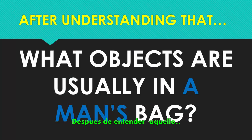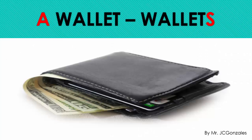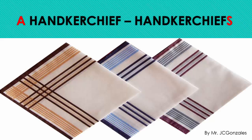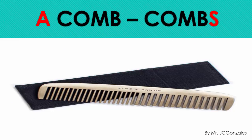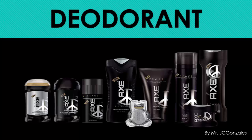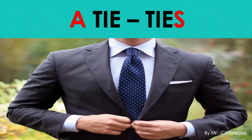After understanding that, what objects are usually in a man's bag? That's an interesting question. For example: a wallet — wallets. A handkerchief — handkerchiefs. A comb — combs. Deodorant. A tie — ties.